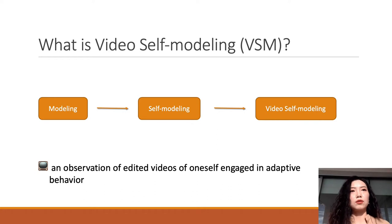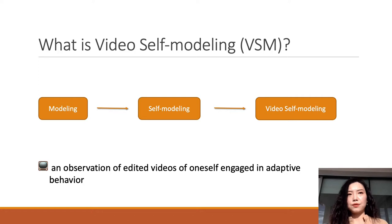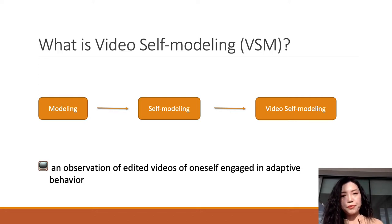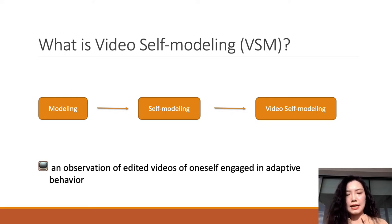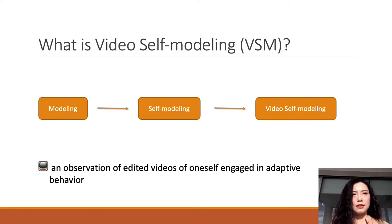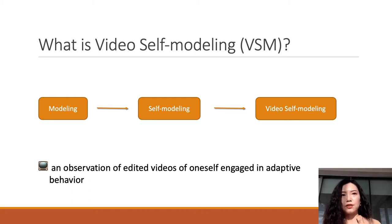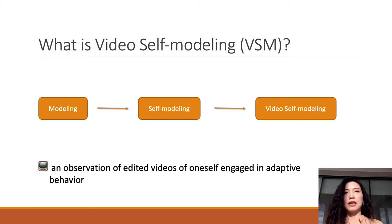Video self-modeling refers to observation of edited videos of oneself engaged in adaptive behavior. Video self-modeling is different from traditional video modeling in that it uses videos of oneself and only shows the positive targeted behaviors, which decreases students' frustration and the negative influence from failed behaviors.